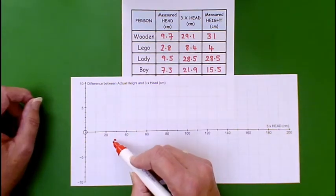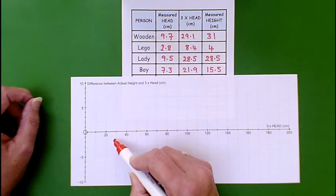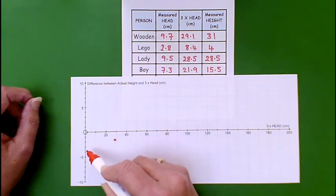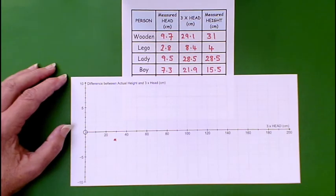So the point is plotted at 29.1 and negative 1.9. Now I'm going to plot the other differences.